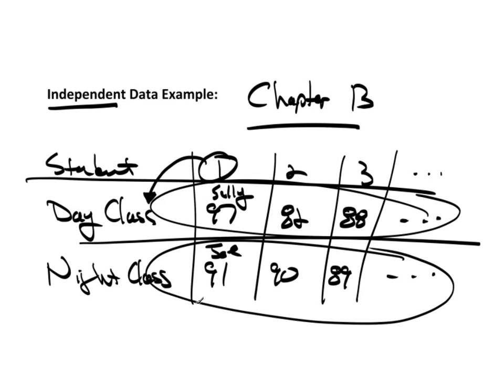So, this is independent data. There's two different sources. It may feel like the same source because they're both chapter 13, but chapter 13 isn't being measured. It's the student being measured. This is the source. And like I said, student one here is not the same as student one down here. So, there's two different sources.